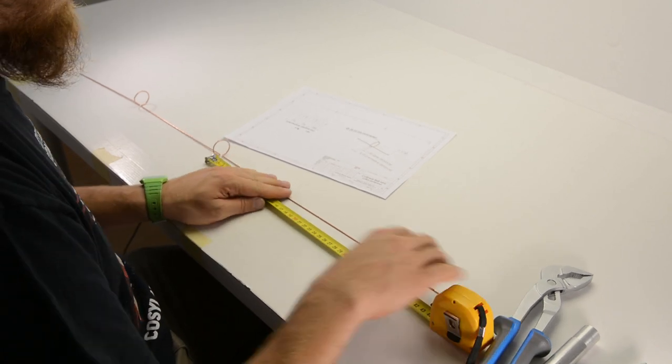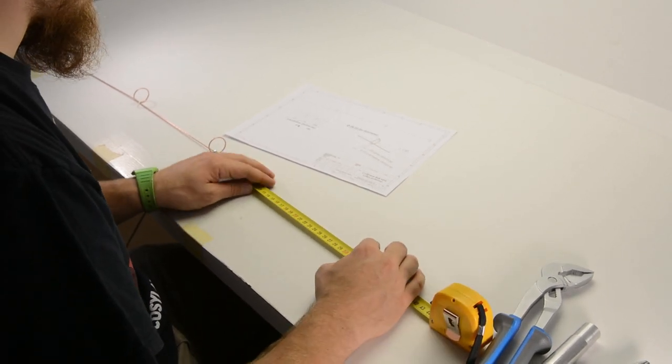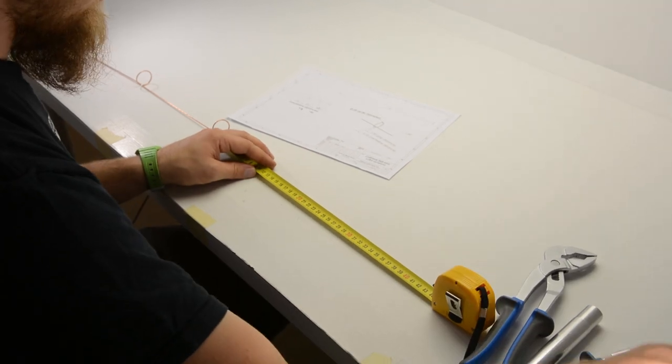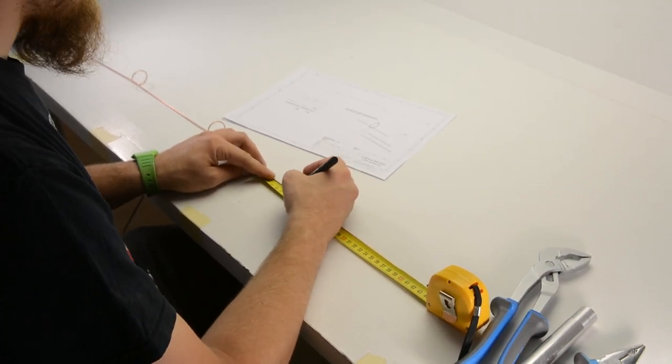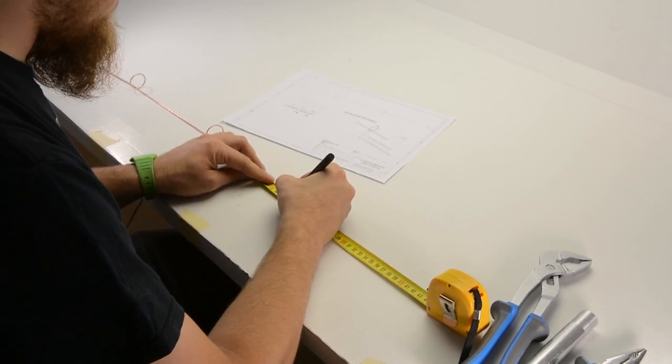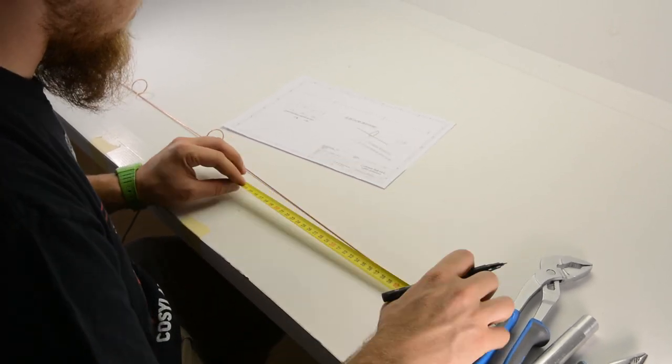And now we measure the last distance which is, in this case, 186 millimeters. We will mark 2 millimeters less. It is 184 millimeters and marking it here on the wire.